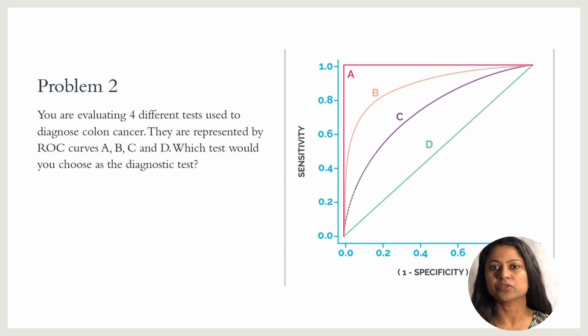Let's do another question. You are evaluating four different tests used to diagnose colon cancer. They are represented by the ROC curves A, B, C and D. Which test would you choose as the diagnostic test? The correct answer is option A. Since A has the highest AUC or area under the curve, A will have the highest accuracy.